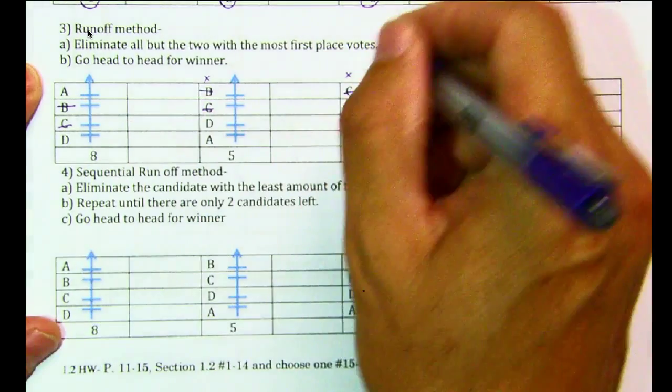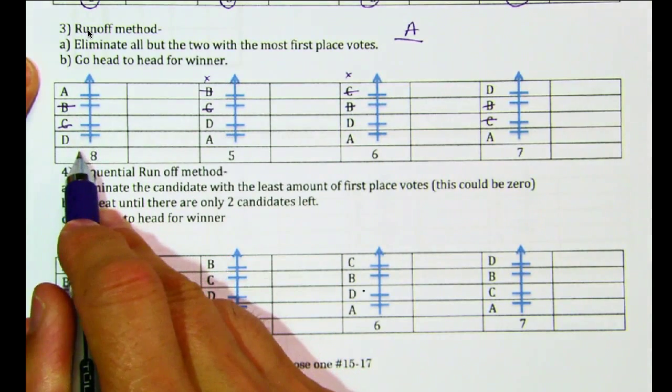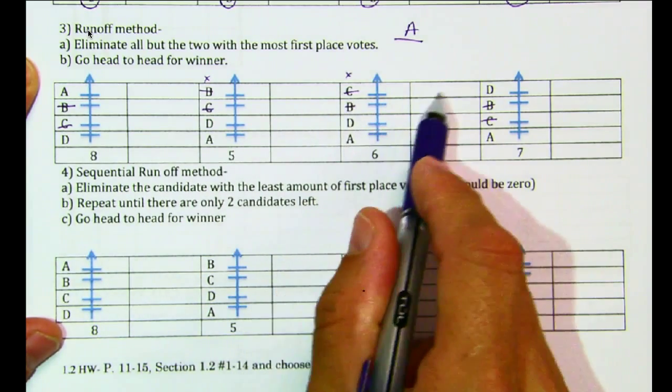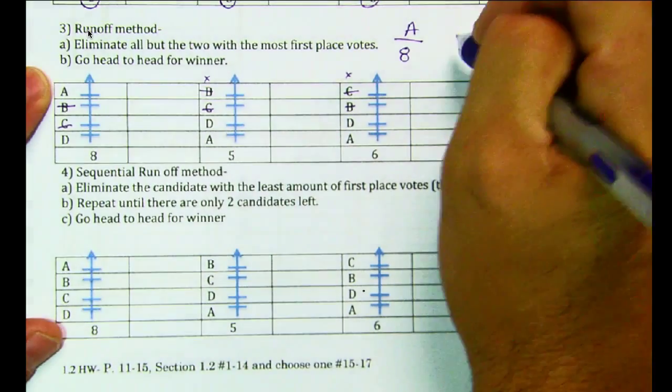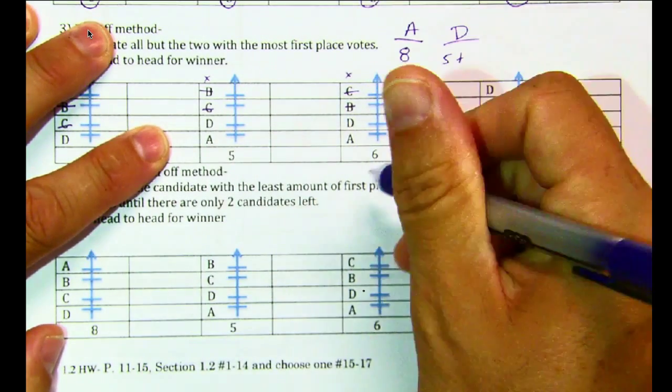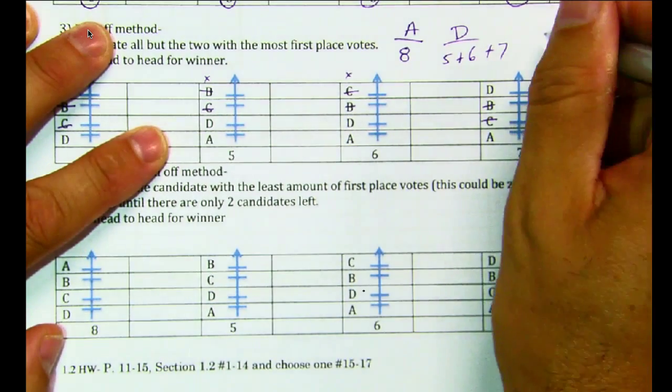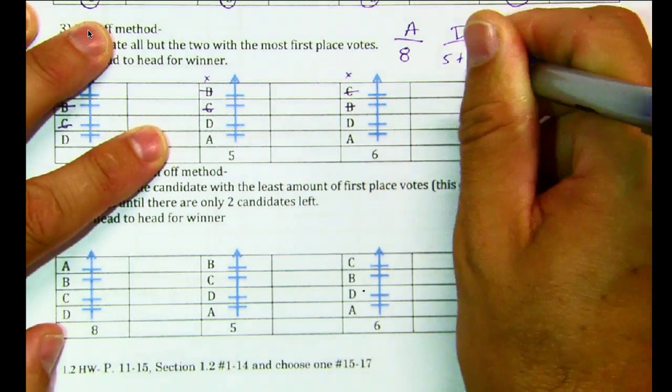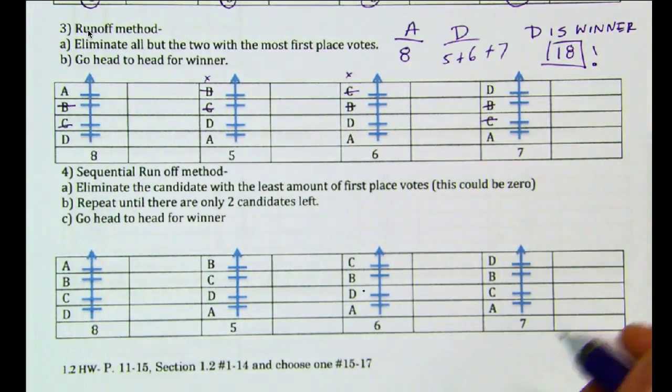So what happens here now is that if I tally up A, in this case right here, for these eight people, A beats D. Here, D beats A. D beats A? Oh, D beats A. So I'm going to tally up eight votes for A. And for D, I'm going to tally up, I'm going to have my five, I'm going to have my six, and I'm going to have my seven. And so who's going to win this one? D is the winner. How many votes? If we can add, that would be 18. Okay, so that's the runoff.